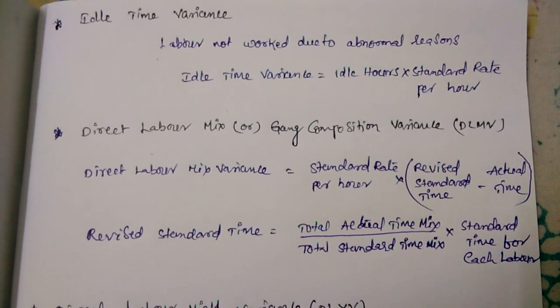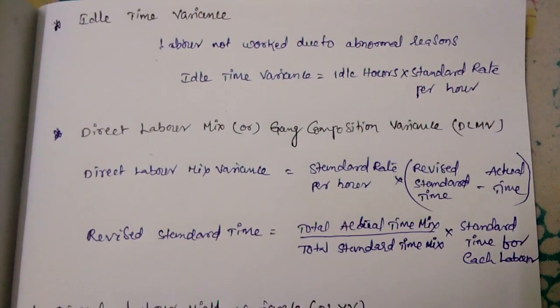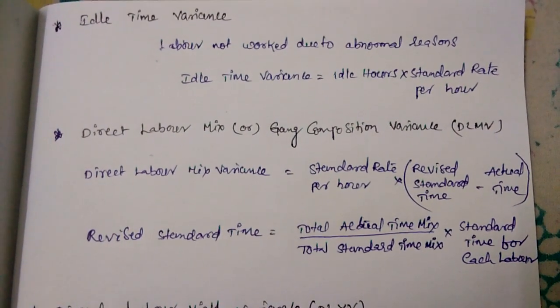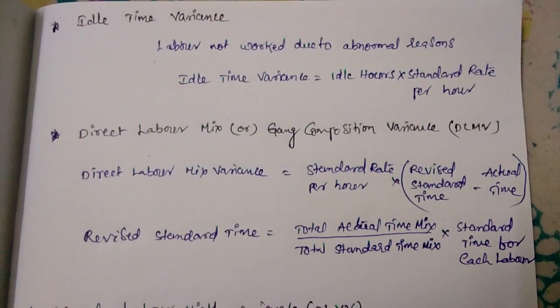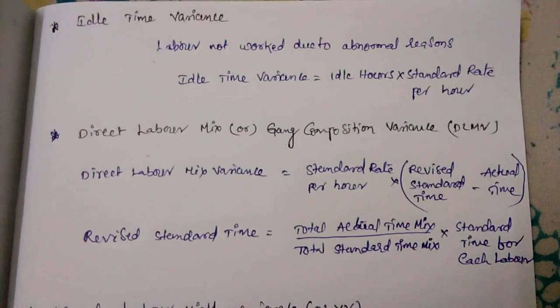The next variance is Direct Labor Mix Variance, also called Gang Composition Variance.